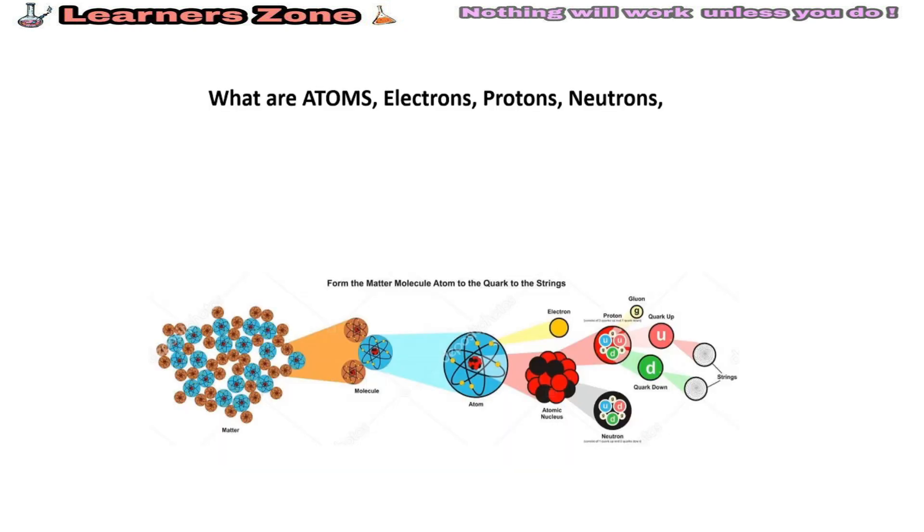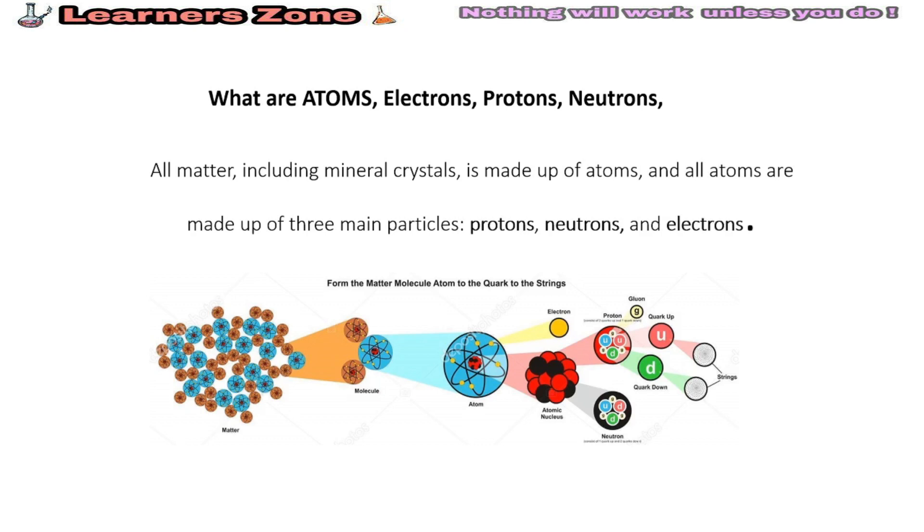What are atoms and what are electron, proton and neutron? As I have shown in the diagram, matter is made up of molecules. Molecules are made up of atoms and atoms contain the particles: nuclei, electron, proton, neutron, and they further are made up of quarks. All matter, including mineral crystals, is made up of atoms, and all atoms are made up of three main particles: proton, neutrons, and electrons.